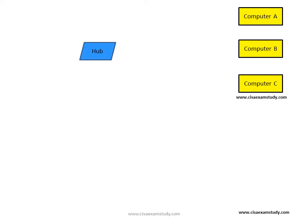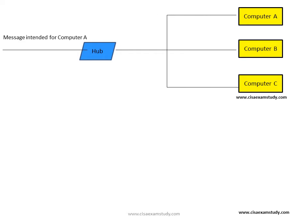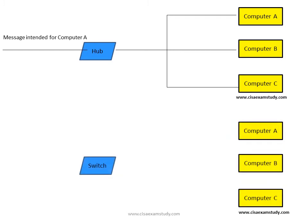Let us take one example. When a hub is used and we have multiple computers, one message intended for computer A is forwarded by the hub to all computers — even though it is intended only for computer A. This will unnecessarily cause high traffic and bandwidth usage. But with a switch, the message will be sent to only the intended recipient, so B and C will not receive this message. This is the difference between switch and hub.